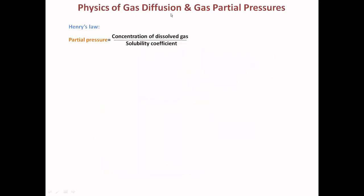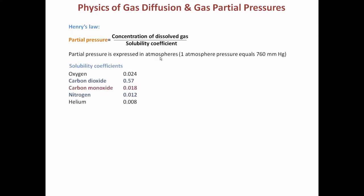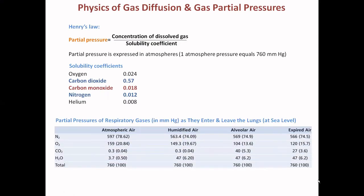The physics of gas diffusion and gas partial pressure is based on Henry's law: partial pressure equals concentration of dissolved gases divided by the solubility coefficient. Partial pressure is expressed in atmospheres; one atmosphere equals 760 mmHg at sea level. The solubility coefficients are: oxygen 0.024, carbon dioxide 0.57, carbon monoxide 0.018, nitrogen 0.012, and helium 0.008.